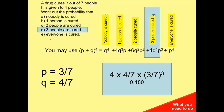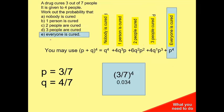Now I've got three people cured: 4 times (4/7) times (3/7) cubed, which is 0.108. And the last one, I've just got (3/7) to the power 4.